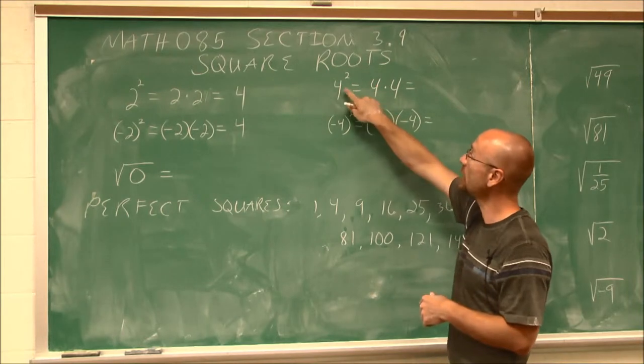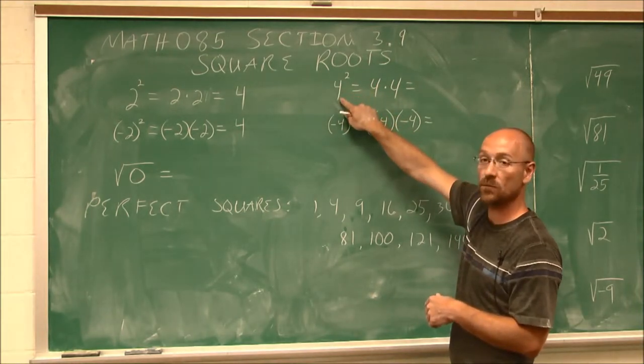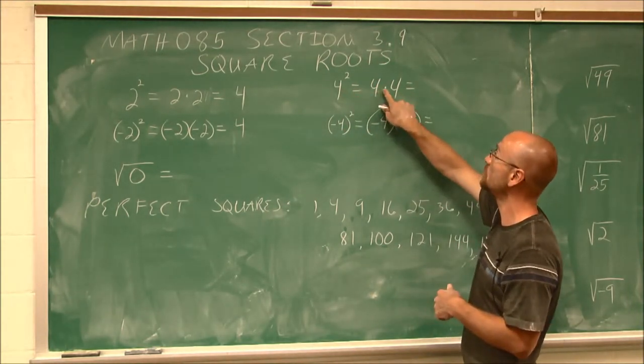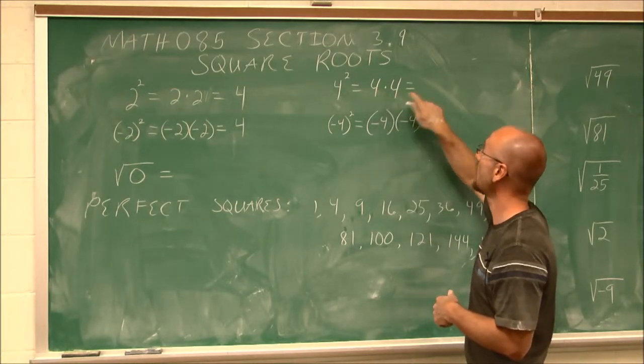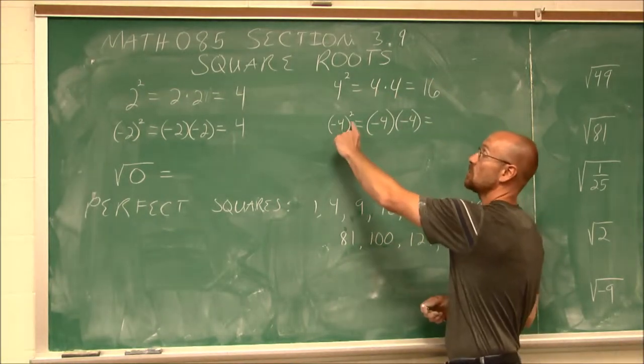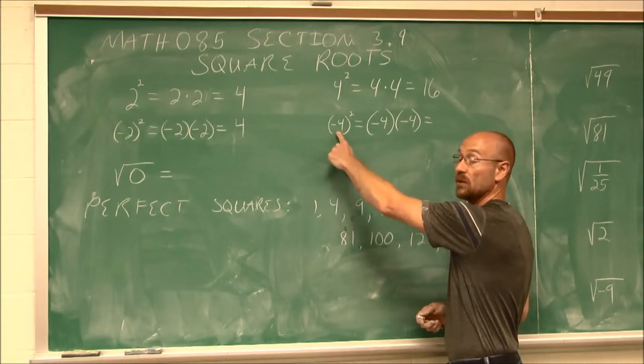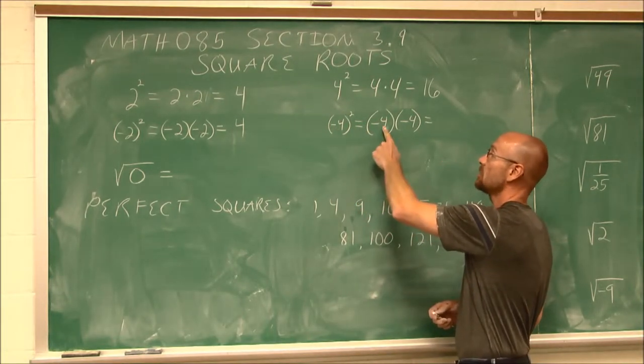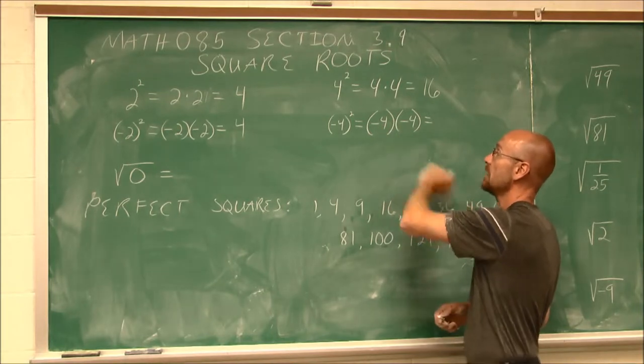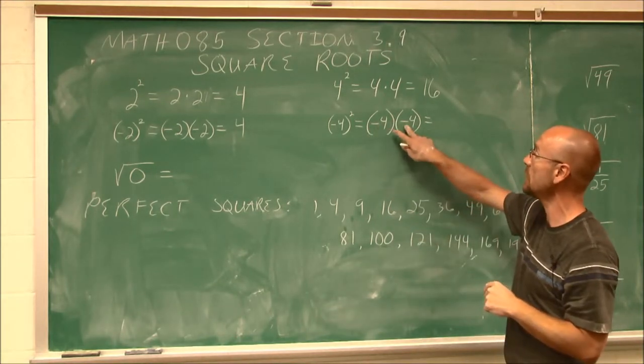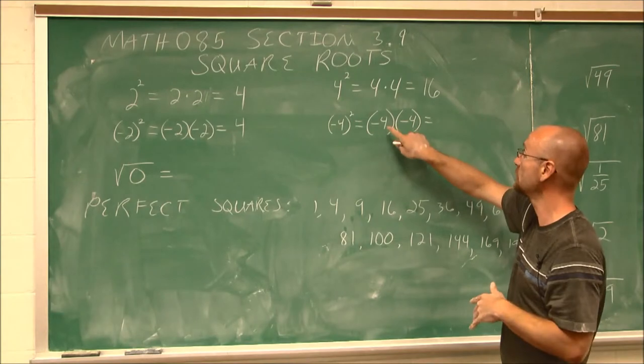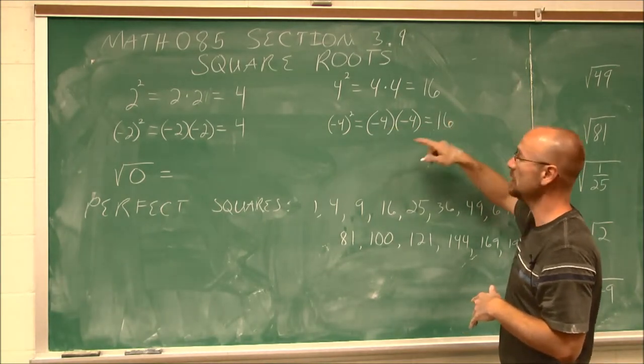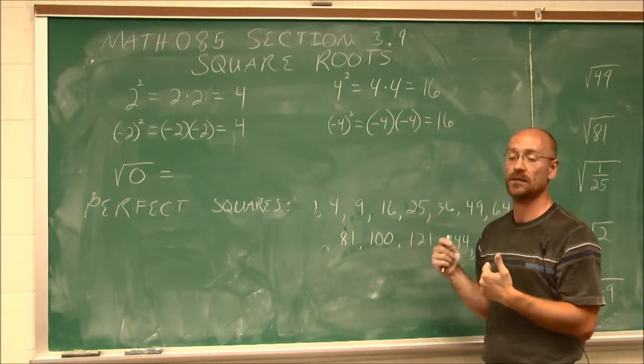Let's look at 4. If I have 4 squared, I'm taking 4 and I'm multiplying it by itself. Two factors of 4. 4 times 4 is 16. If I'm squaring the quantity of negative 4, this integer negative 4, it says take this value and multiply it by itself. Negative 4 times negative 4. Well, still, a negative times a negative is a positive. 4 times 4 is 16. So when we square something, we always get a positive.